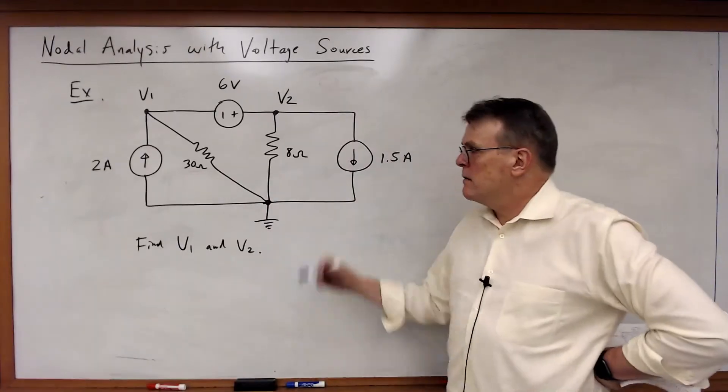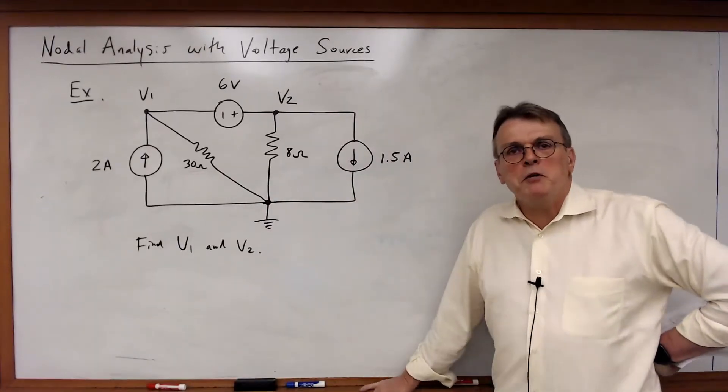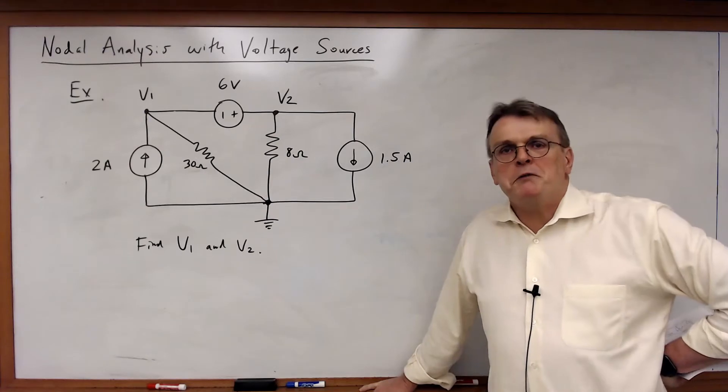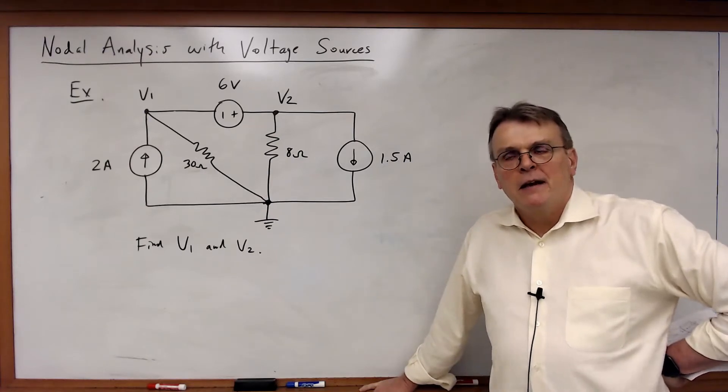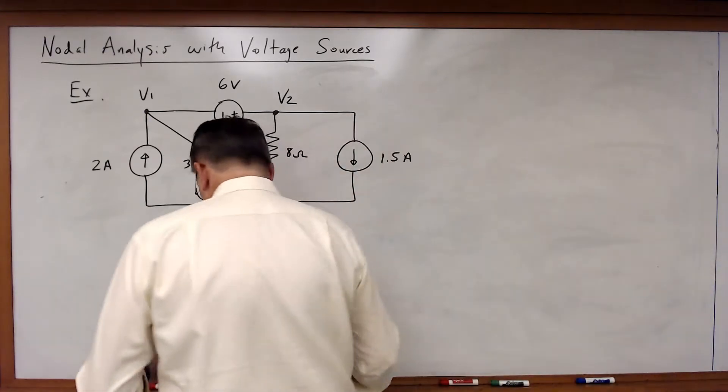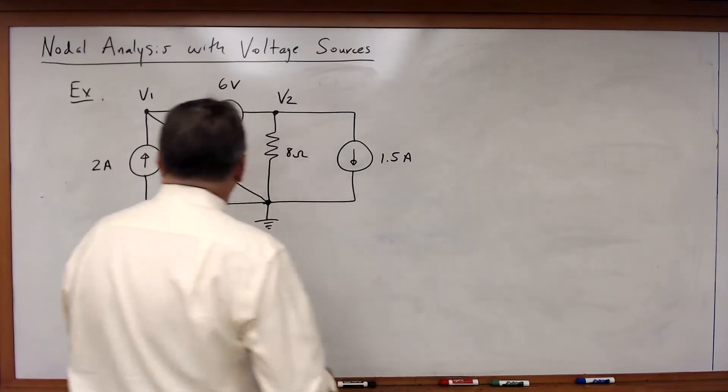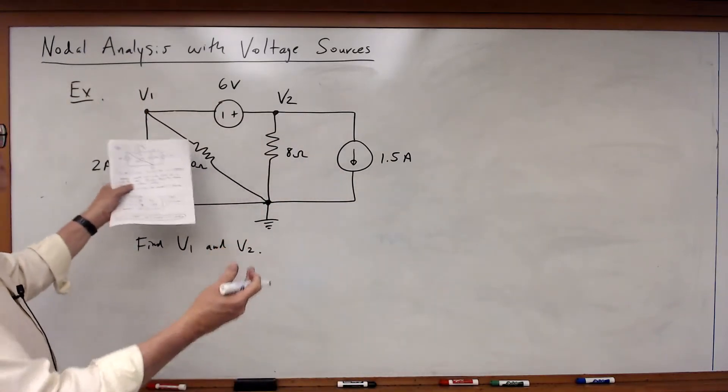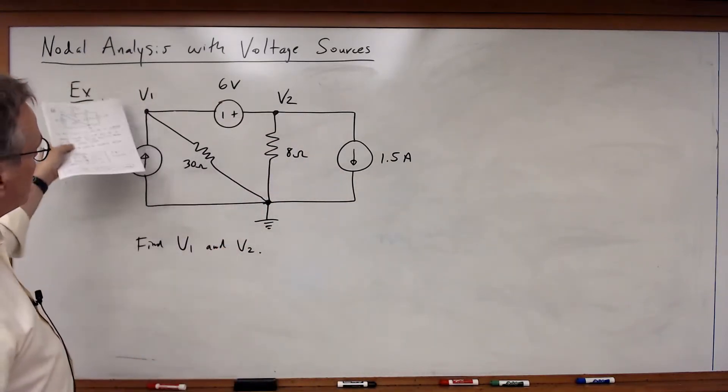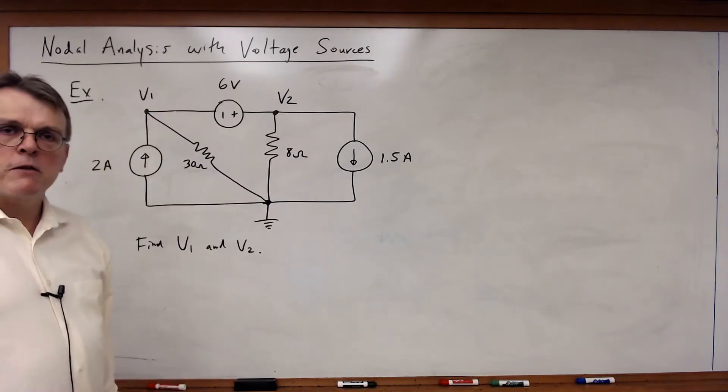How are we going to do that? Well this is no different than the problem we just did a minute ago. We're going to use exactly the same technique. Let's go through and in this case let's select current directions and let's write the KCL equations for those two nodes.